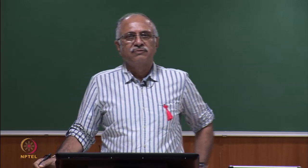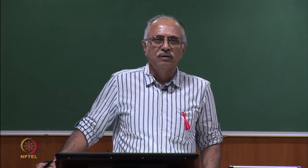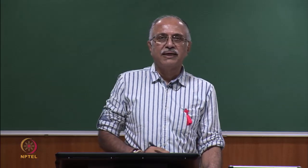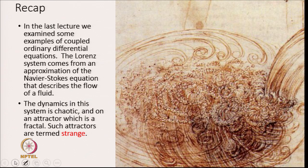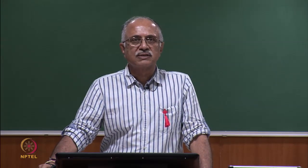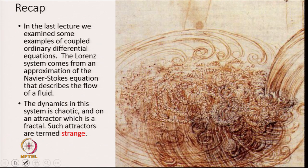Today we will continue our discussion of flows and chaos in flows via discussion of two very paradigmatic examples: the Baker and the Horseshoe maps. Recall that in the last lecture, we looked at some examples of coupled ordinary differential equations which come from a truncation or simplification of the Navier-Stokes equation. The Lorentz system, so important in the development of this subject, exhibited motion that was circulatory, aperiodic, chaotic, and on a fractal attractor.